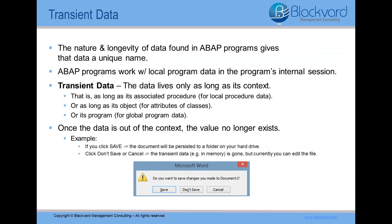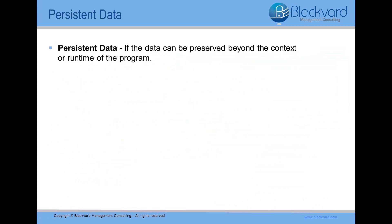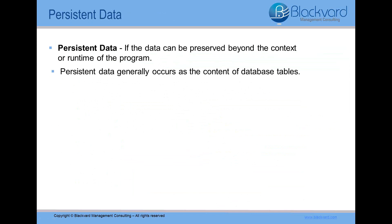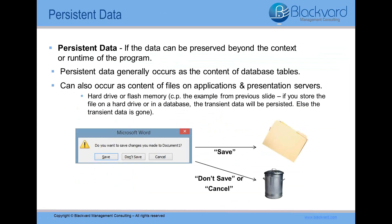A good example of transient data is: say you're saving a Word document and you click Save — the document will be persisted to a folder on your hard drive. But on the other hand, if you click Don't Save or Cancel, the transient data is gone, but you can still currently edit the file. Now, if the data can be preserved beyond the context or runtime of the program, it is then called persistent data. In SAP systems, persistent data usually occurs as the content of database tables, but it can also occur as the content of files on application and presentation servers, such as a hard drive or flash memory. You can store the data file on your hard drive or in a database, so the transient data will be persisted. But if the transient data is not saved, it will be deleted.